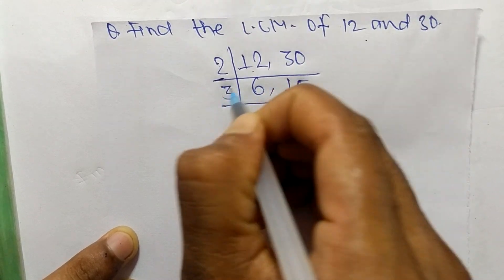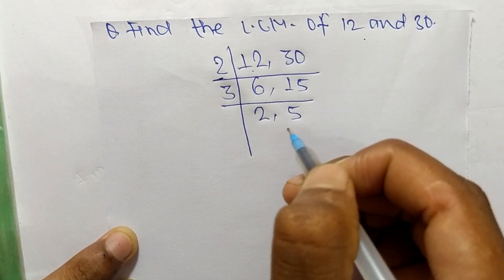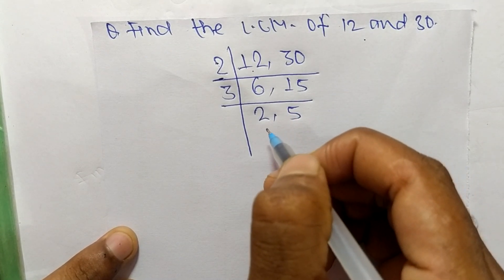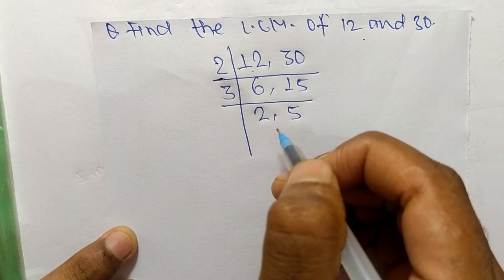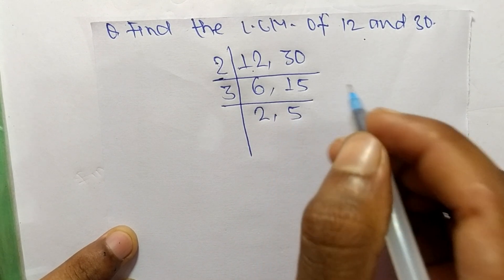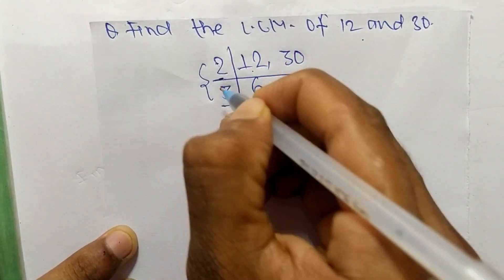So the number is 3. 3 times 2 means 6, and 3 times 5 means 15. So now we get here 2 and 5, which are not exactly divisible by the same number. So its LCM is equal to, from this part, it is 2 times 3.